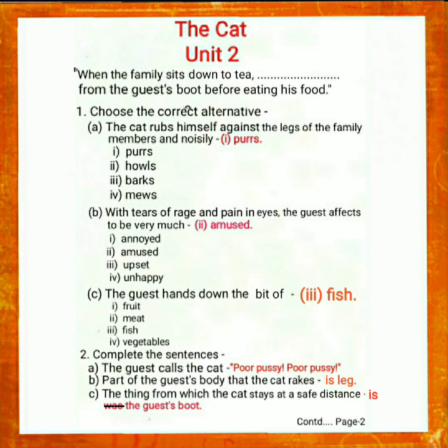B. With tears of rage and pain in eyes, the guest affects to be very much — option 1: annoyed; option 2: amused; option 3: upset; option 4: unhappy. The correct answer is: with tears of rage and pain in eyes, the guest affects to be very much amused.